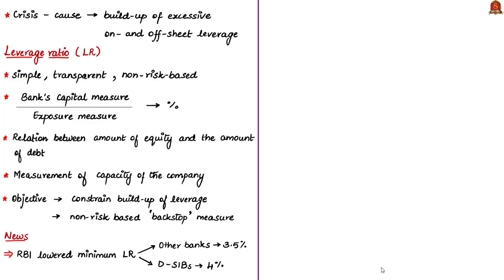An underlying cause of the global financial crisis was the buildup of excessive on- and off-balance sheet leverage in the banking system. Leverage in economics means the result that occurs from using borrowed capital as a funding source when investing to expand a firm's asset base and generate returns on risk capital. Leverage can also refer to the amount of debt a firm uses to finance its assets. When a company is described as highly leveraged, it means it has more debt than equity.